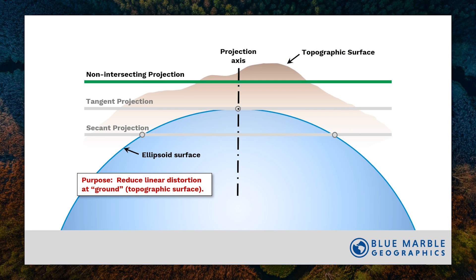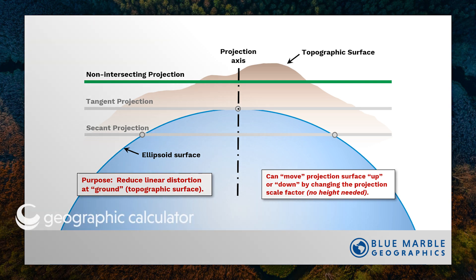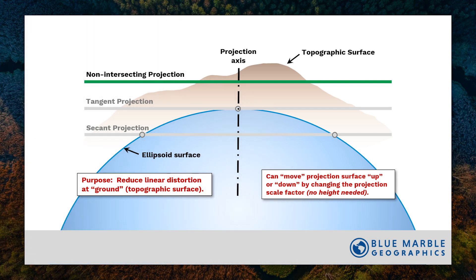Here are three typical placements of the mapping plane relative to the ellipsoid or the topographic surface. The one we're interested in for LDPs is the non-intersecting projection, which is going to reduce the linear distortion at the ground. We can move among the traditional secant or tangent projections up to that non-intersecting projection simply by changing the scale factor of the projection — we don't need to introduce any height information or expanded ellipsoids.